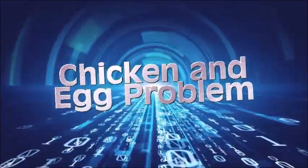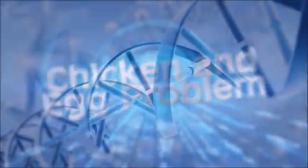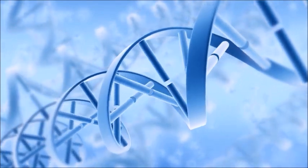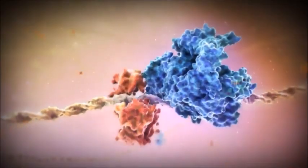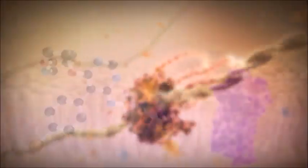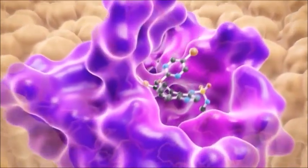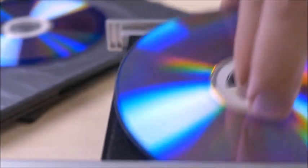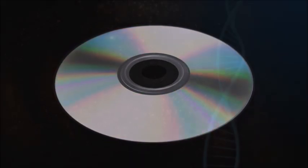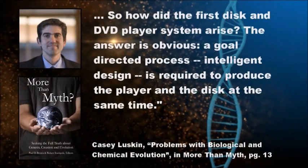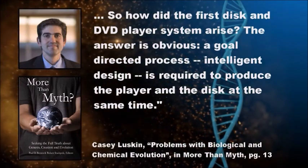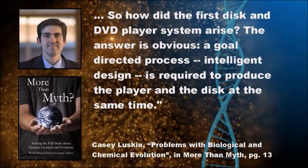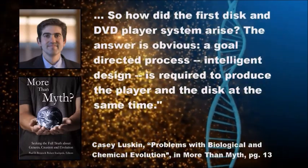There is a very real chicken and egg problem with explaining the origin of life naturalistically. The DNA molecule is built by biological machines. The problem is that the information for building these machines is stored in the DNA molecule. You can't get new DNA without machinery, and you can't get machinery without pre-existing DNA. To appreciate this problem, consider an analogy of a DVD and a DVD player. What if the instructions for building the first DVD player were only found encoded on a DVD? You could never play the DVD to learn how to build a DVD player. So how did the first disc and DVD player system arise? The answer is obvious. A goal-directed process, intelligent design, is required to produce the player and the disc at the same time.